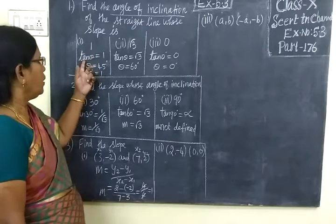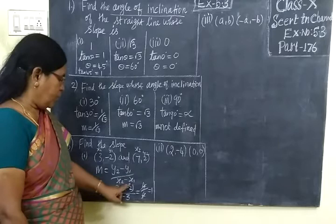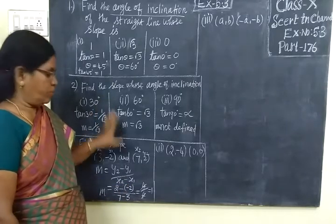So angle can be found using tan θ. So, two points are given: (y₂ - y₁)/(x₂ - x₁). This is the slope formula.